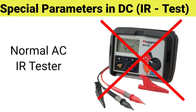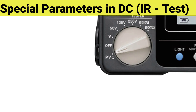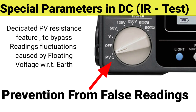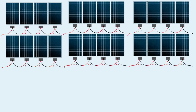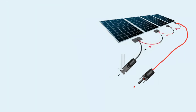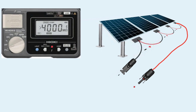Unlike a normal IR tester, this device has a special PV resistance parameter to bypass the fluctuation caused by the solar string, as even open strings have floating voltages with respect to earth which may generate incorrect readings on a normal IR tester. First, select the array you want to test and open the string you want to test.